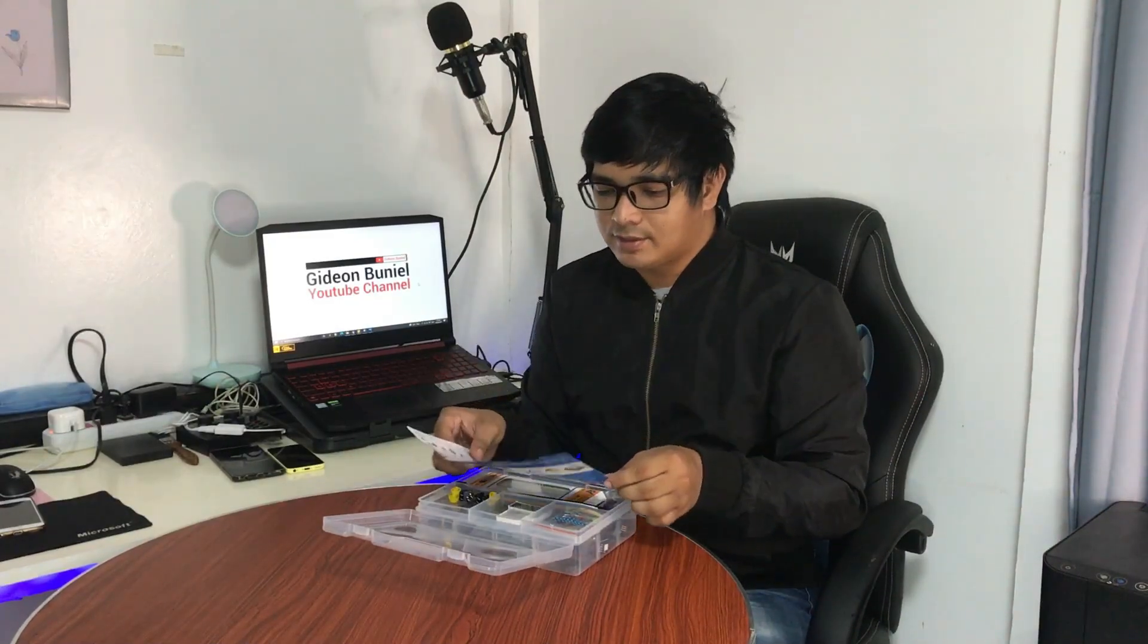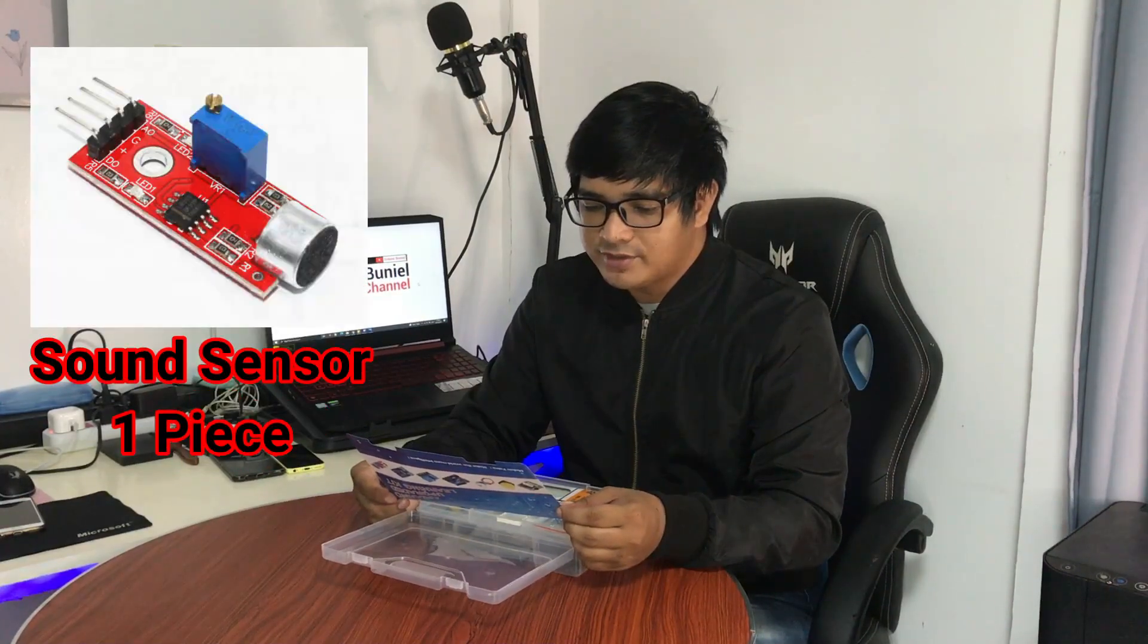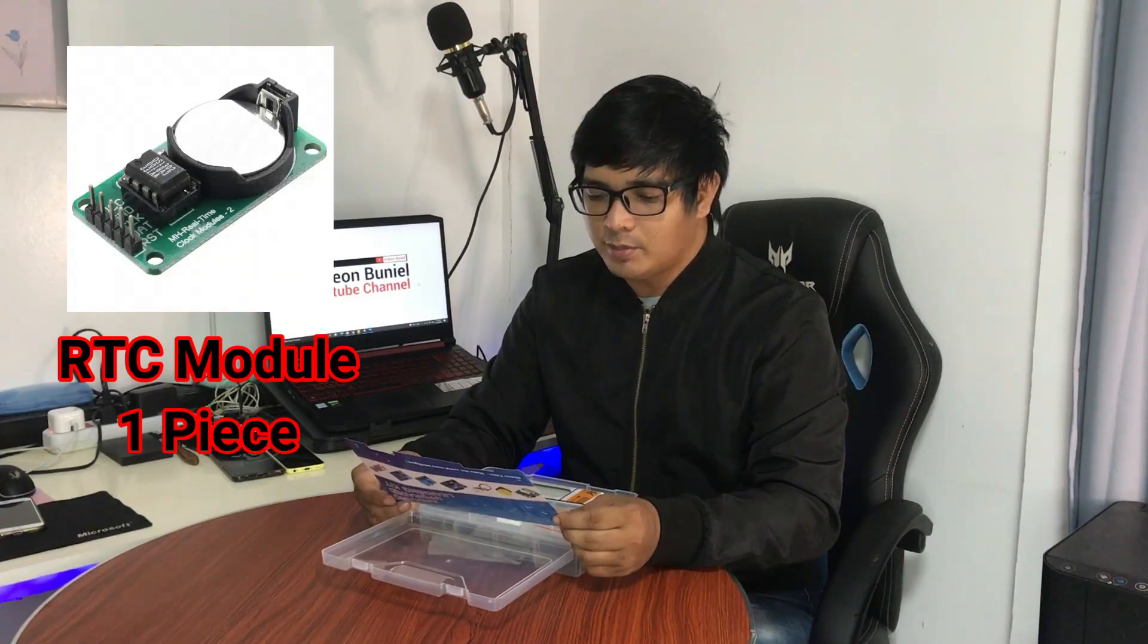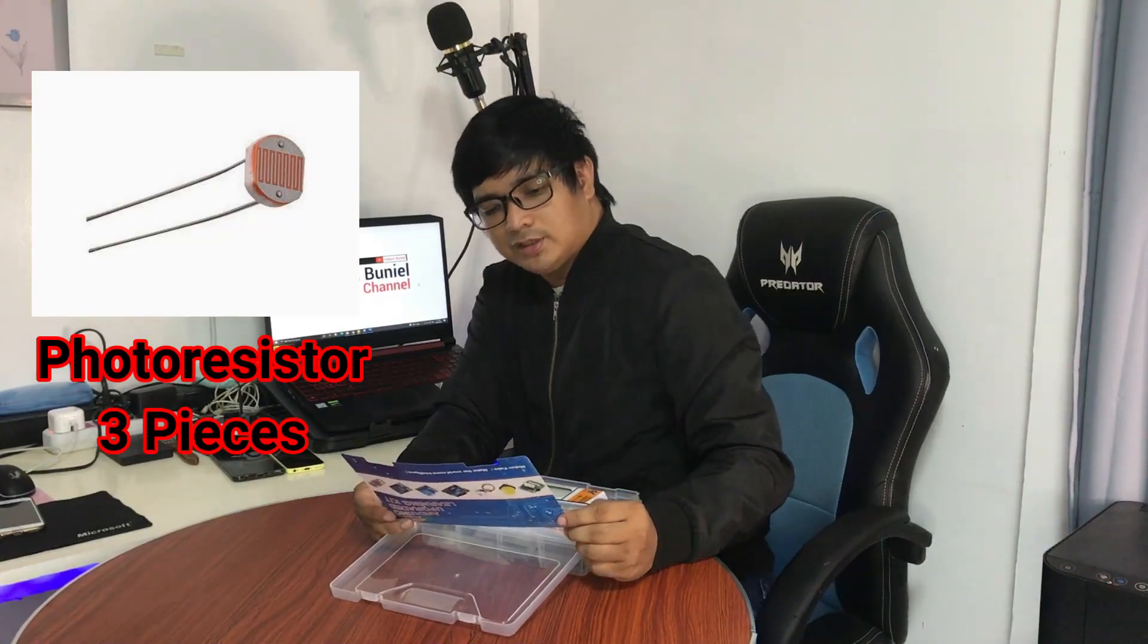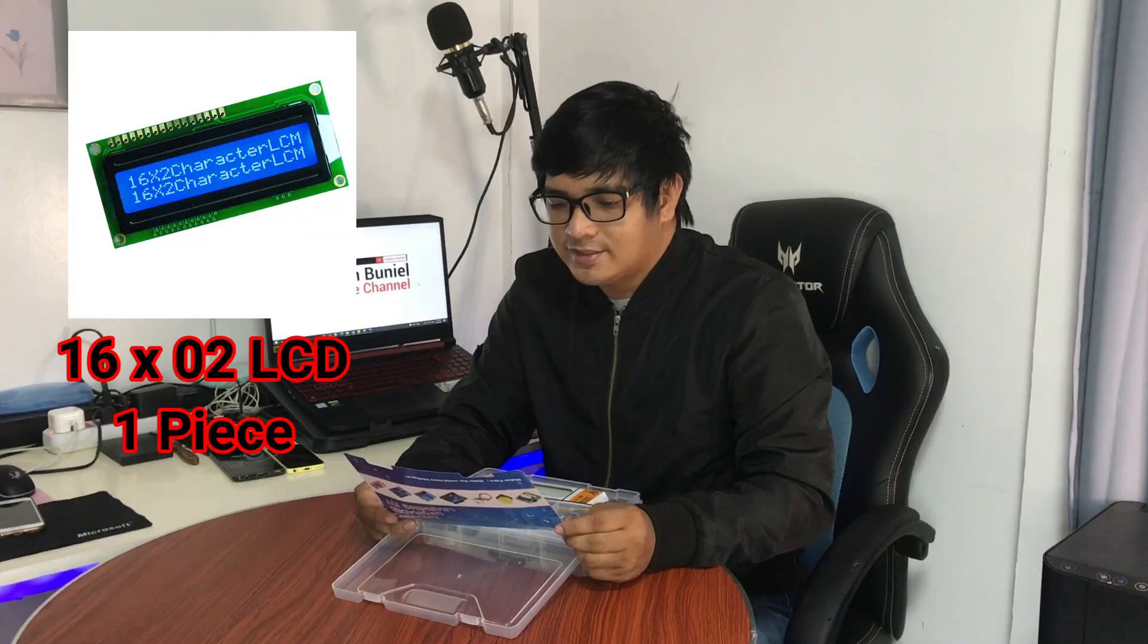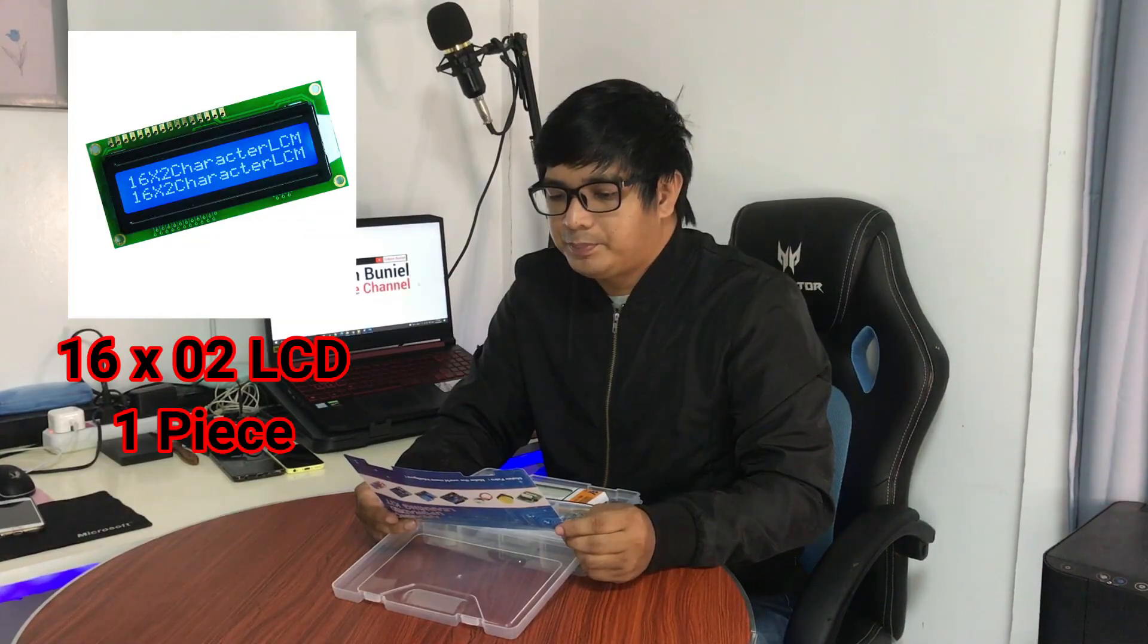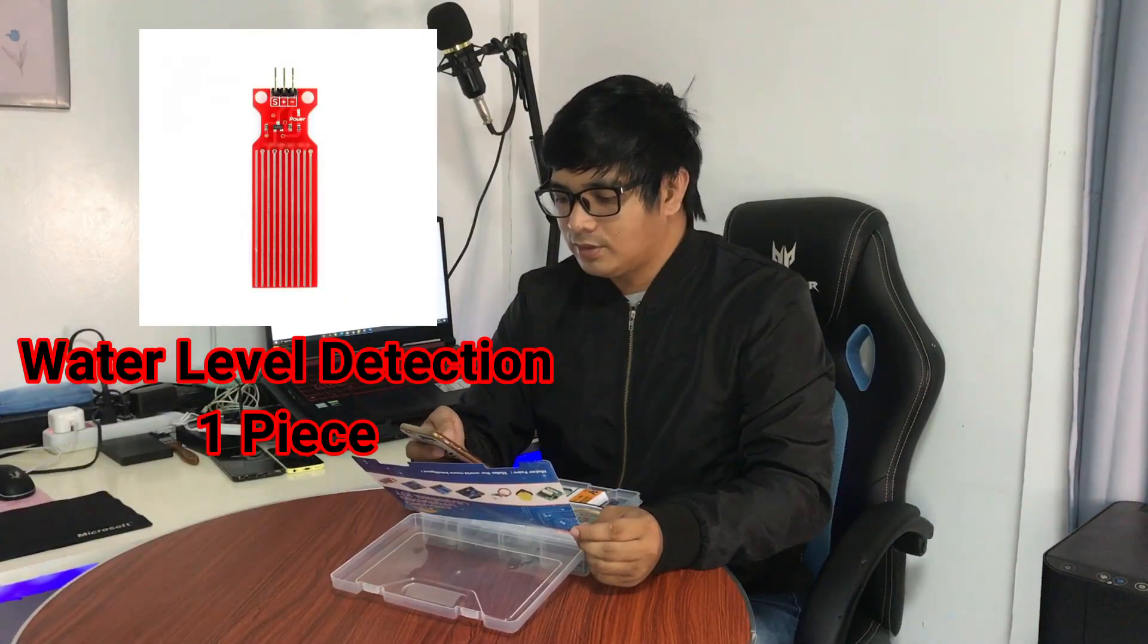For this Arduino kit, as you can see it has its list. We have the Arduino Uno R3 one piece, the remote one piece, sound sensor module one piece, DS1302 RTC module one piece, photo resistor three pieces, LED 15 pieces, LCD 1602 module with pin header one piece, and water level detection sensor module one piece.